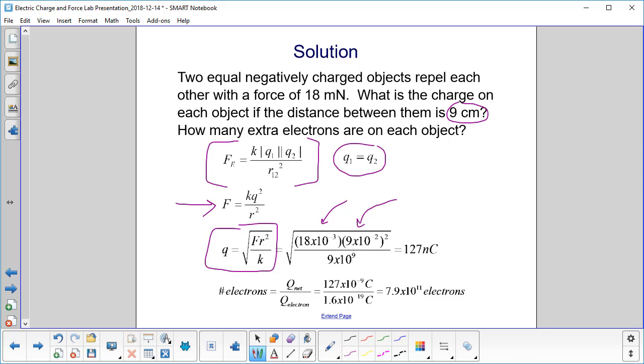We divide through by K. Our answer is 127 nanocoulombs.